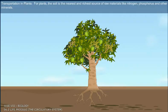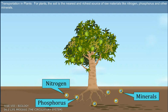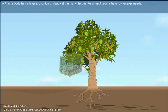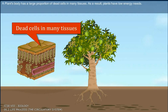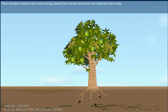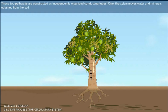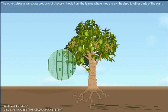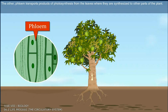Transportation in plants: For plants, the soil is the nearest and richest source of raw materials like nitrogen, phosphorus and other minerals. The absorption of these substances occurs through the part in contact with the soil, namely roots. Plants' bodies have a large proportion of dead cells in many tissues, resulting in low energy needs. Plant transport systems move energy stored from leaves and raw materials from roots through two independently organized conducting tubes: the xylem, which moves water and minerals obtained from the soil, and the phloem, which transports products of photosynthesis from the leaves to other parts of the plant.